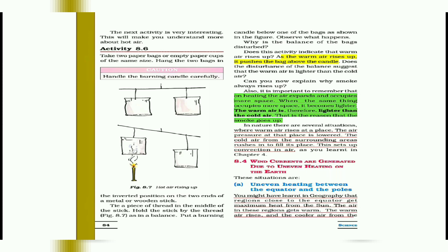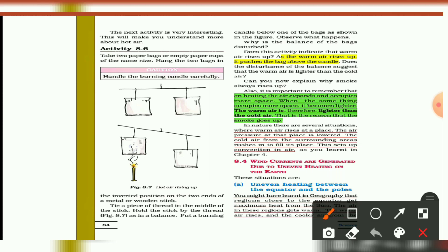Now place a lit candle under one of the bags. Why is the balance disturbed? We can see that before the candle the bags are balanced, but after placing the lighted candle, the balance of the bags gets disturbed. This activity indicates that warm air rises up. As the warm air rises, it pushes the bag above the candle, so that the balance gets disturbed.